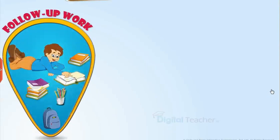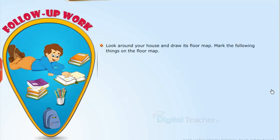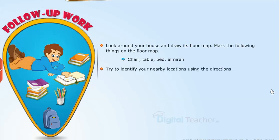Follow up work: Look around your house and draw its floor map. Mark the following things on the floor map: Chair, table, bed, almira. Try to identify your nearby locations using the directions.